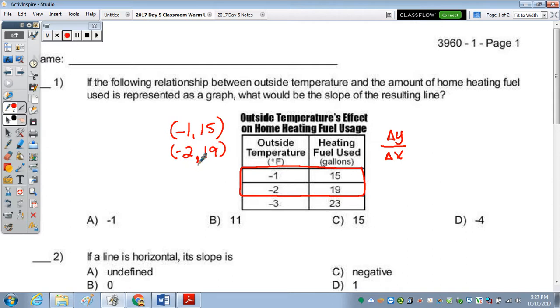But the slope is that fraction. So y2 minus y1 would be 19 minus 15 over negative 2 minus negative 1. And subtracting a negative turns positive. So we end up with 4 over negative 1, which is negative 4. So the correct answer is D.